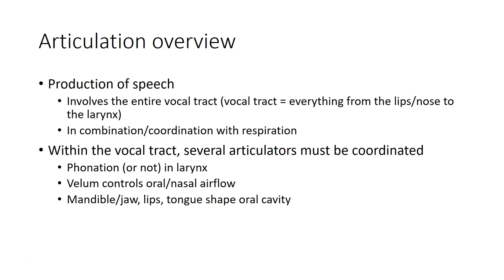Overall, our production of speech involves the entire vocal tract—everything from the lips and nose at the interface to the outside world, down to the larynx—as well as coordination with respiration to provide airflow to create speech sounds. Within the vocal tract, we have the coordination of various articulators: the larynx determining whether there is phonation, the velum controlling whether air flows through the oral or nasal cavity or both, and all the different speech articulators from Chapter 6 shaping the oral cavity.